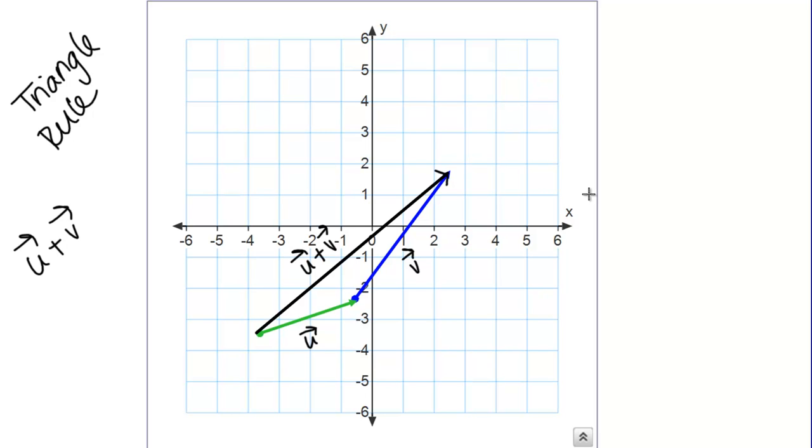It doesn't matter which order you do this in. I could have considered V my first vector and then put the tail of U on the head of V, and it would have got the same thing. It would be in a different position, but it would be the same vector. This is the triangle rule.